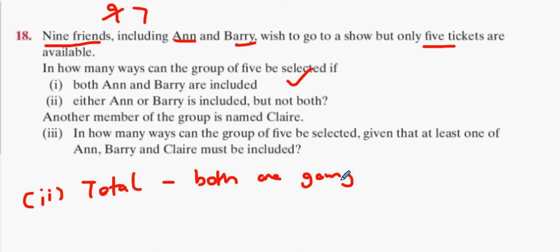Oh, wait. Forgot. Minus none of them are going. What's that leave over then? So, total number of ways, take away the number of ways both of them are going, take away the number of ways none of them are going. And what that should leave over is the number of ways one of them is going.